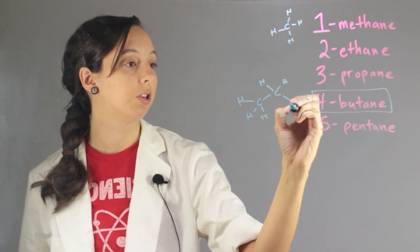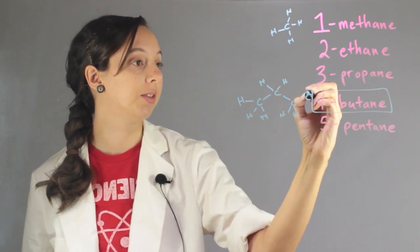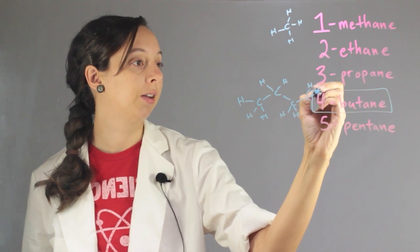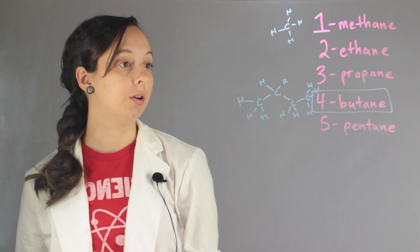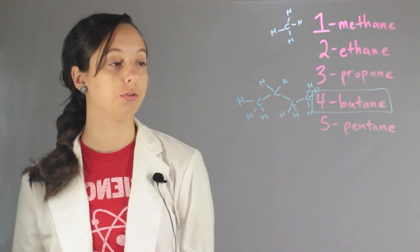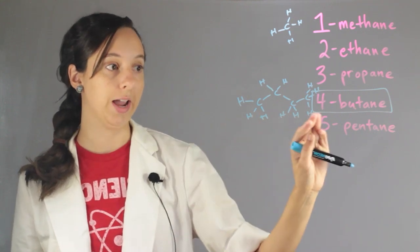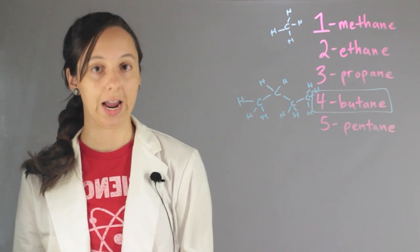ones in the middle have only two because remember carbon can only form those four bonds. And then this other end guy has three also. So this is our structure of butane. It's four carbons, all in a straight line.